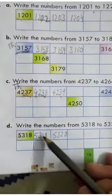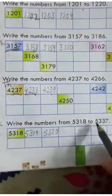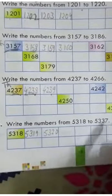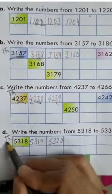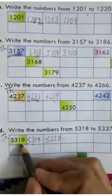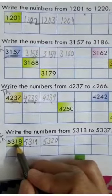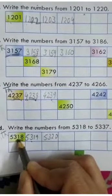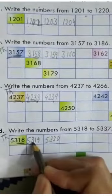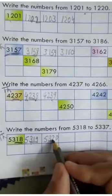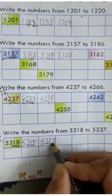Part D: you can write counting from 5318 to 5337. The digit 5 will remain under place value 1000. Only the digits under place values 1s and 100 will change. So after 318 comes 319, and after 319 comes 320.